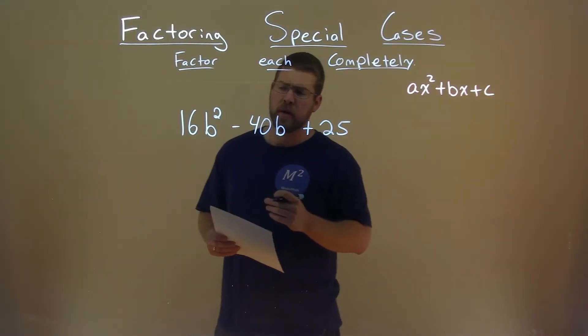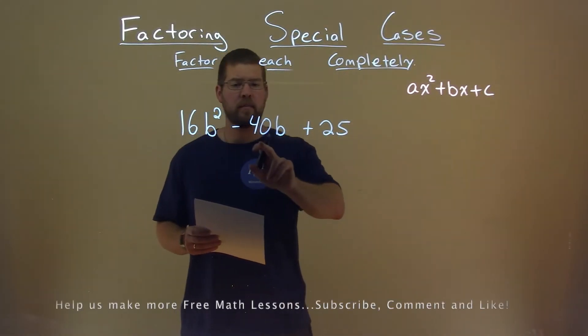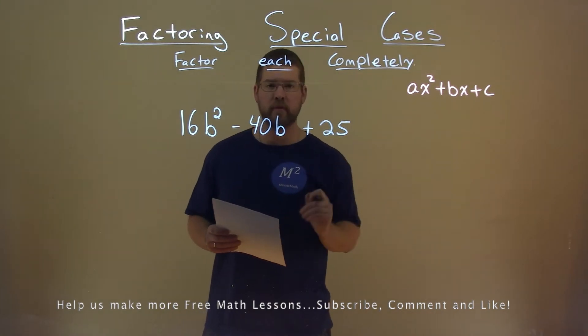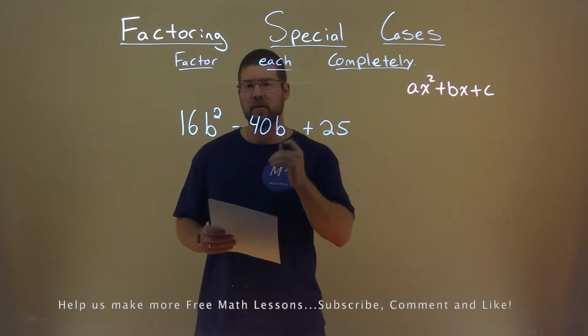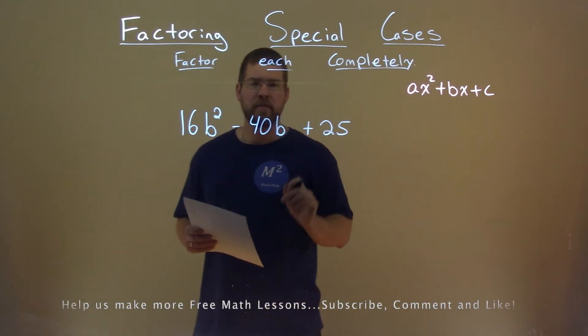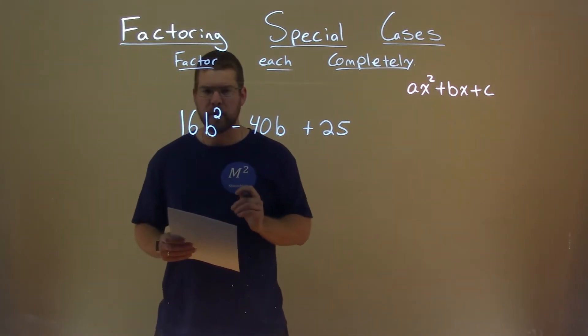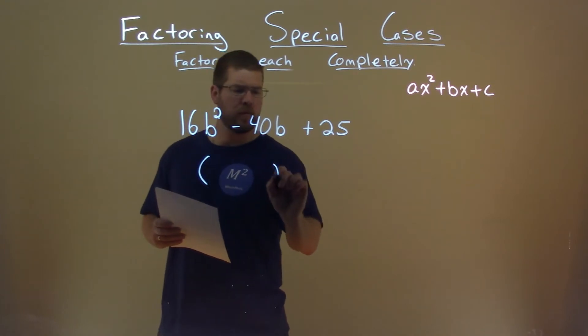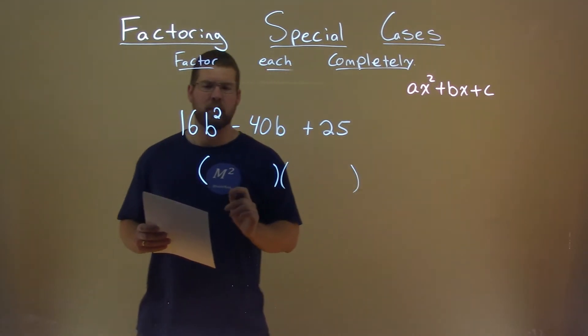We're given this problem right here, 16b squared minus 40b plus 25, and we want to factor this completely. What I notice here is that my a value and c value are both perfect squares. So we know it has to be factored in some form like this.